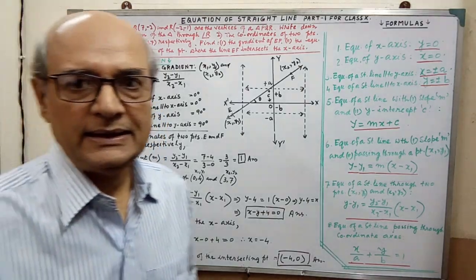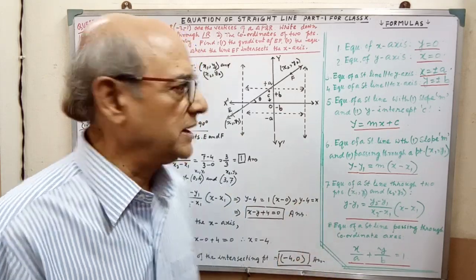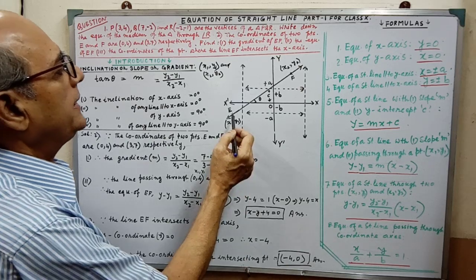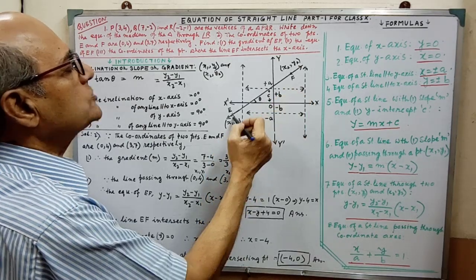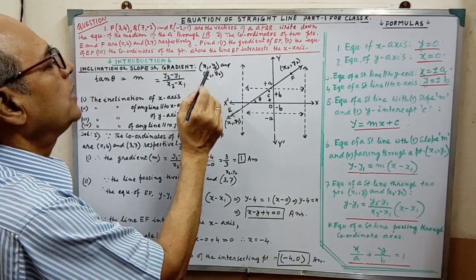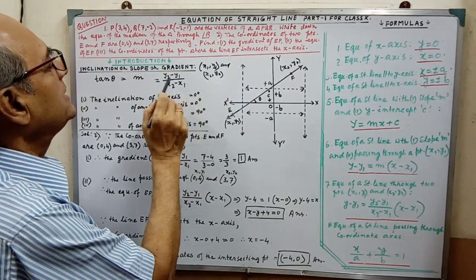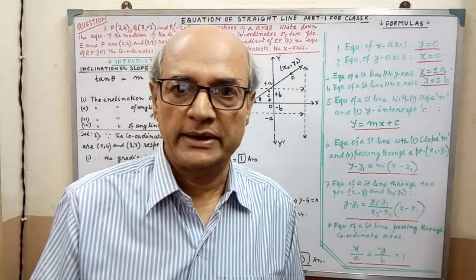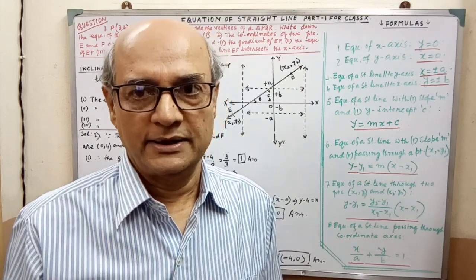M will be given. Gradient is used when the coordinates of two endpoints are given — suppose x1, y1 and x2, y2. Then the gradient will be y2 minus y1 divided by x2 minus x1. By applying this formula, we will get the gradient.